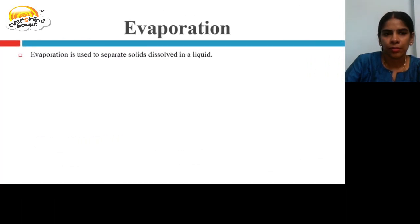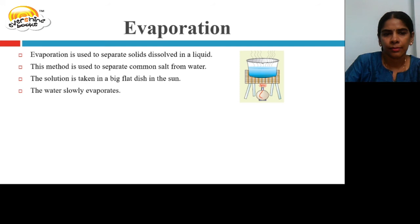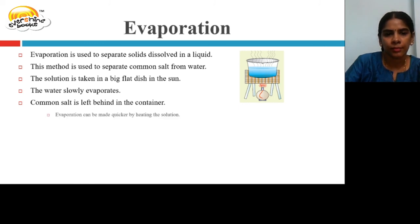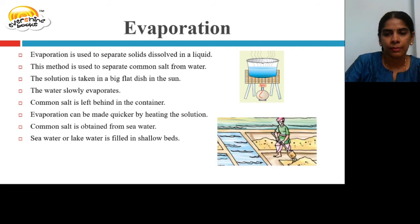Evaporation is used to separate solids dissolved in a liquid, such as separating common salt from water. The solution is taken in a big flat dish and placed in the sun; the water slowly evaporates and common salt is left behind. Evaporation can be made quicker by heating the solution. Sea water or lake water is filled in shallow beds where water evaporates by the heat of the sun, leaving salt on the bed.